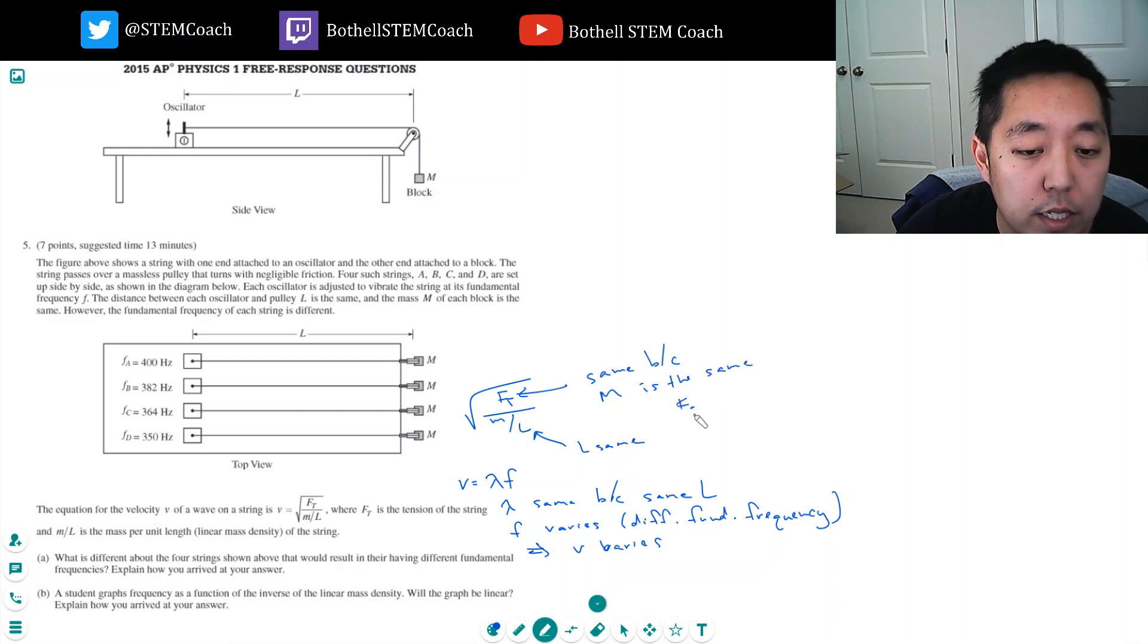And FT is equal to just M times G. If you draw a free body diagram on this block, this is FT and this is MG. And because this block, unless this thing is falling, it's not falling, right? It's just, we're assuming it's up here. That means FT has to equal MG. There's no acceleration on this block. So, FT is the same.